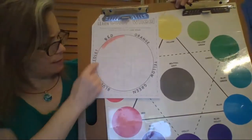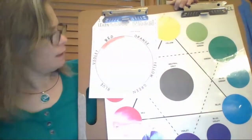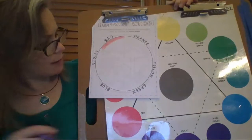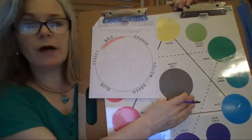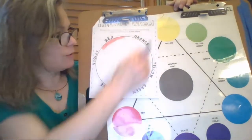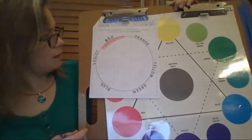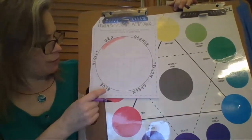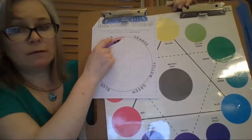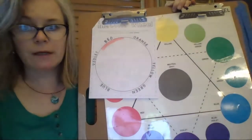Over here, it says violet. Now you'll notice that this wheel and this wheel are not in the same order, and that's okay, as long as the colors are in the right place. So for example, violet is always going to be in between blue and red. It's over here, but it's still in between the blue and the red.